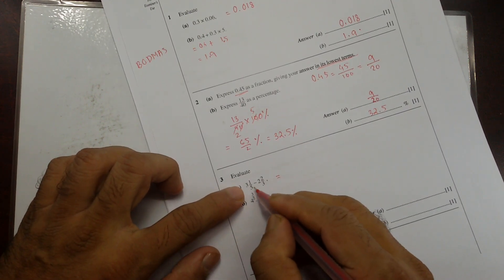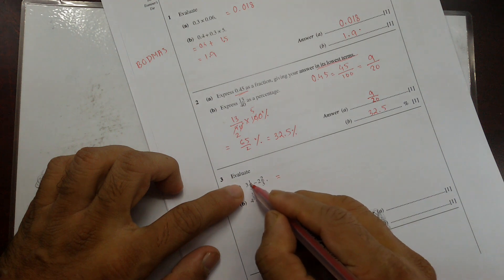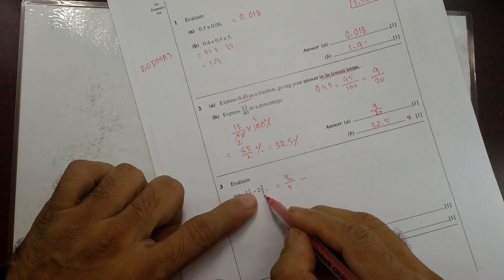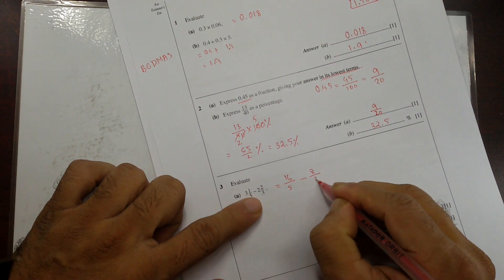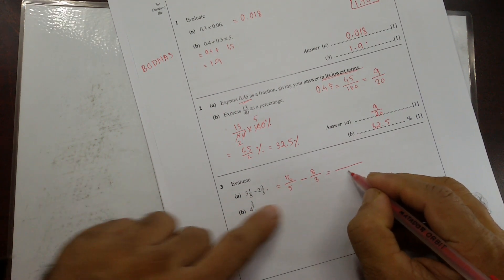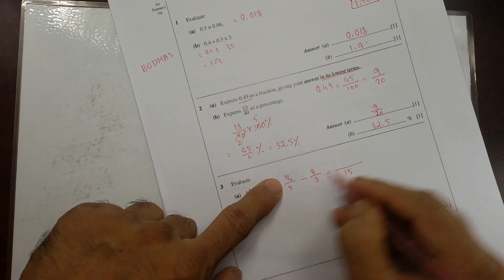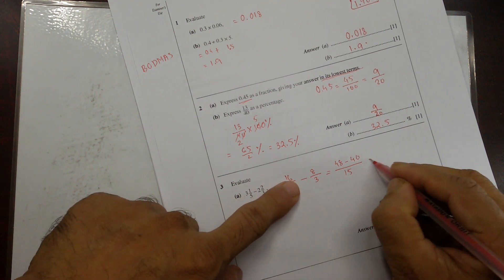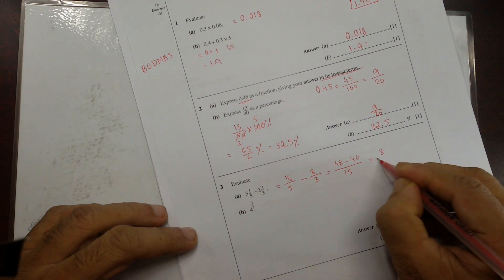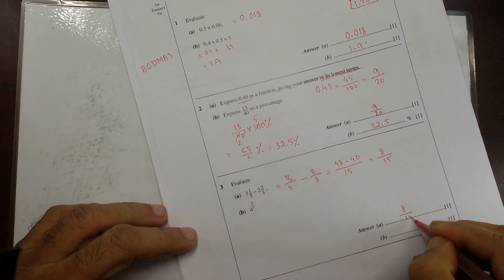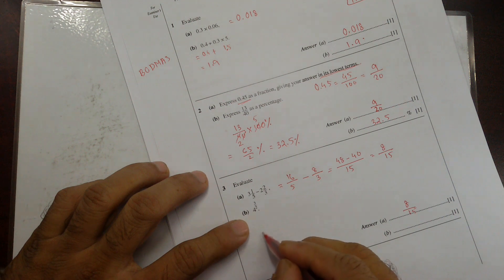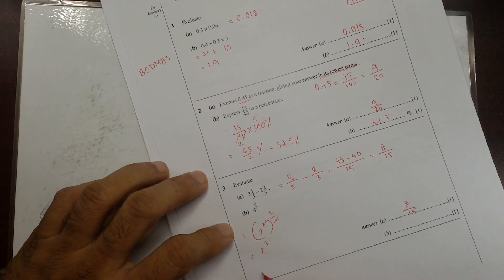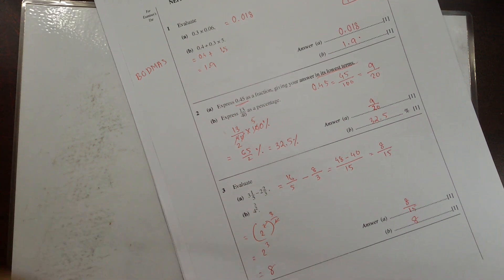Evaluate. So this is mixed number. Change it to improper fraction: 5, 3 is 15 plus 1, 16 divided by 5 minus 3, 2 is 6, 6 plus 2, 8 divided by 3. They are co-prime, so their LCM would be 5, 3 is 15. And 3, 16 is 48. And 5, 8 is 40. Remember that minus sign. So it's going to be 48 minus 40, that's 8 by 15. And this is indices: 4 can be written as 2 squared, and then you have 3 by 2. 2s cross out. So 2 cubed is going to give you 8.